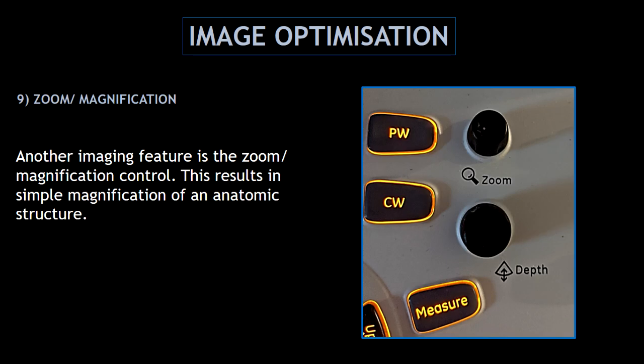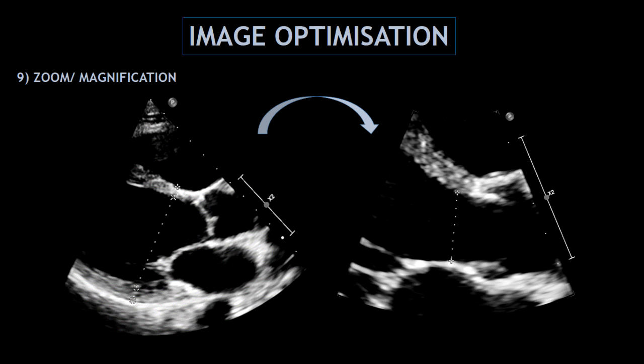Another important feature is the zoom or magnification control. This results in simple magnification of an anatomic structure. You can always find the zoom button on the keyboard of any ultrasound system. This is an example of how I use the zoom or magnification feature — from the parasternal long axis view, I'm zooming the left ventricular outflow tract to measure the diameter.